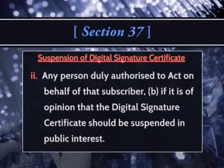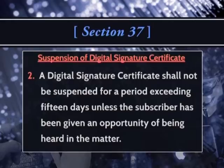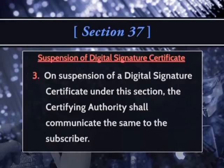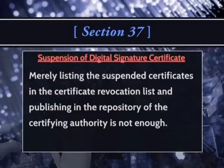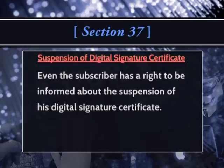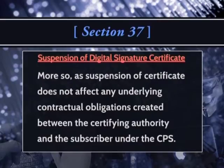The certifying authority may also suspend a certificate if it is of the opinion that it should be suspended in the public interest. A digital signature certificate shall not be suspended for a period exceeding 15 days unless the subscriber has been given an opportunity of being heard in that matter. On suspension of a digital signature certificate, the certifying authority shall communicate the same to the subscriber. Merely listing the suspended certificates in the certificate revocation list and publishing in the repository is not enough. The subscriber has a right to be informed about the suspension, and suspension of the certificate does not affect any underlying contractual obligations under the CPS.